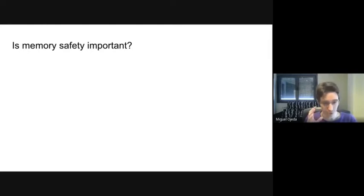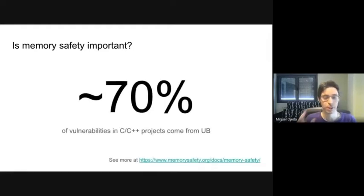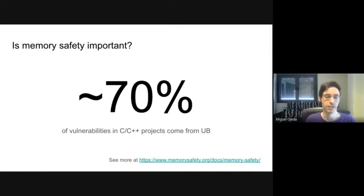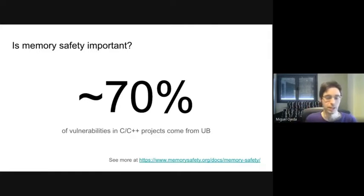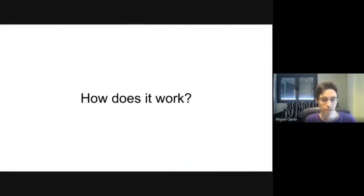To reinforce why memory safety is important: according to Microsoft, Google, and other companies that have extracted data on their vulnerabilities over the last years, around 70% of vulnerabilities in C and C++ projects come from memory safety issues — undefined behavior, etc. You can see more at the link provided.